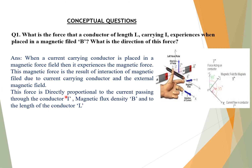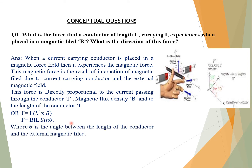This force is directly proportional to the current I passing through the conductor, the magnetic flux density B, and the length of the conductor L. So we can write the magnetic force F = I(L × B), and expanding the cross product: F = BIL sinθ, where θ is the angle between the length of the conductor and the external magnetic field.